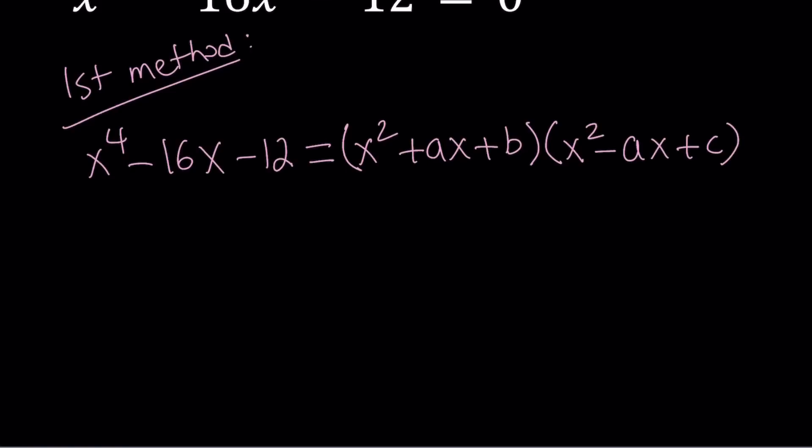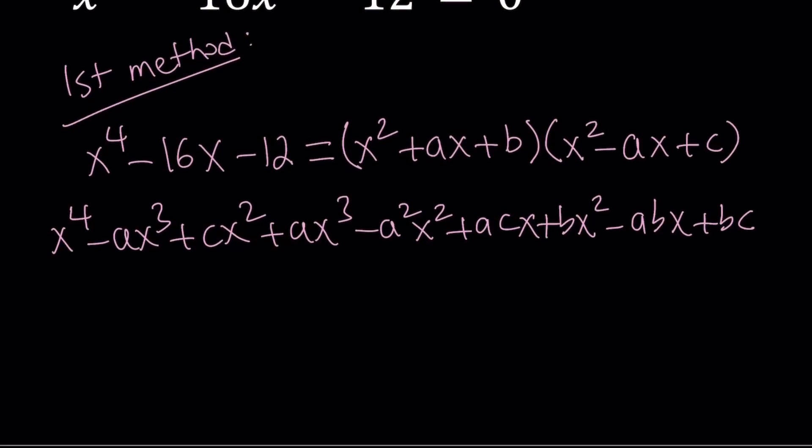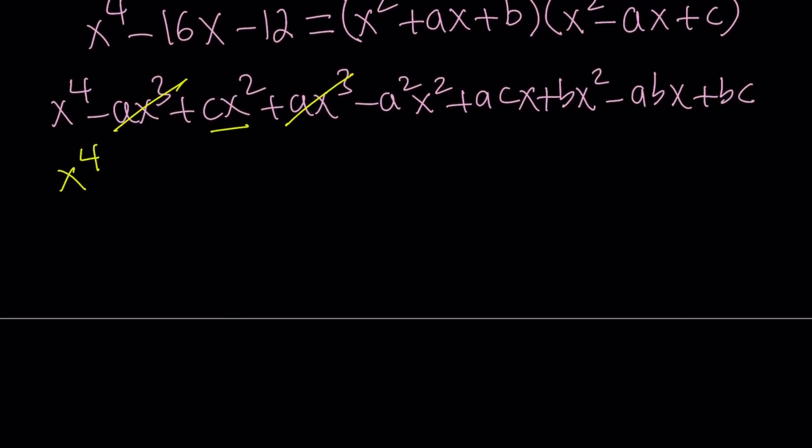So if you go ahead and distribute the whole thing, even though the x cubed term is going to cancel out, I just want to show you that it does. We get x to the fourth power minus ax cubed plus cx squared and then plus ax cubed minus a squared x squared plus acx plus bx squared minus abx plus bc. We should be getting nine terms. And then here, ax cubed and negative ax cubed cancel out.